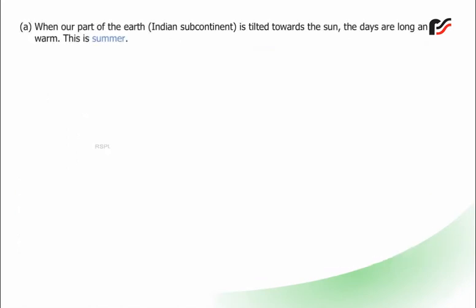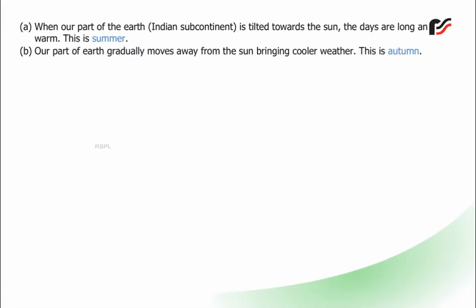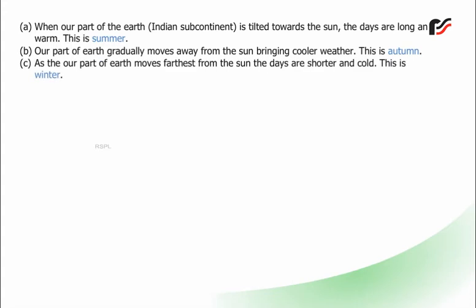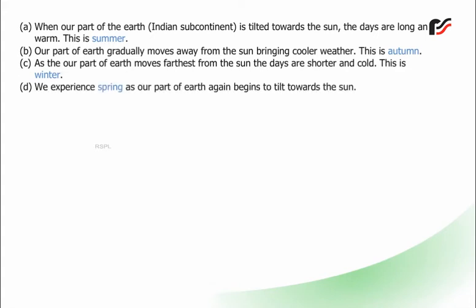When a part of the Earth — the Indian subcontinent — is tilted towards the Sun, the days are long and warm. This is summer. Our part of Earth gradually moves away from the Sun, bringing cooler weather — this is autumn. As our part of Earth moves farthest from the Sun, the days are shorter and cold — this is winter. We experience spring as our part of Earth again begins to tilt towards the Sun.